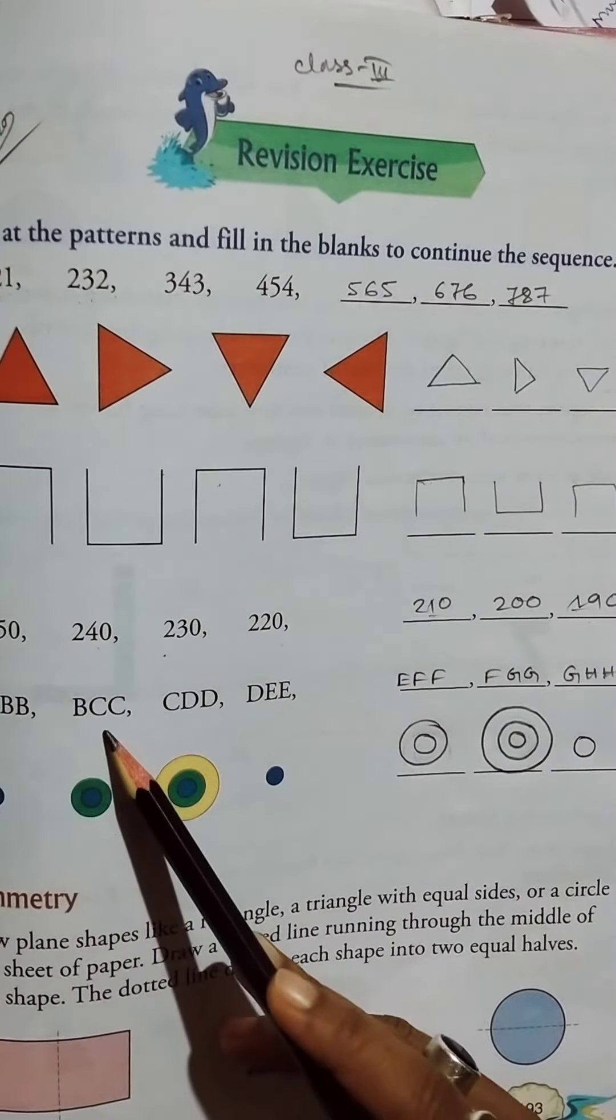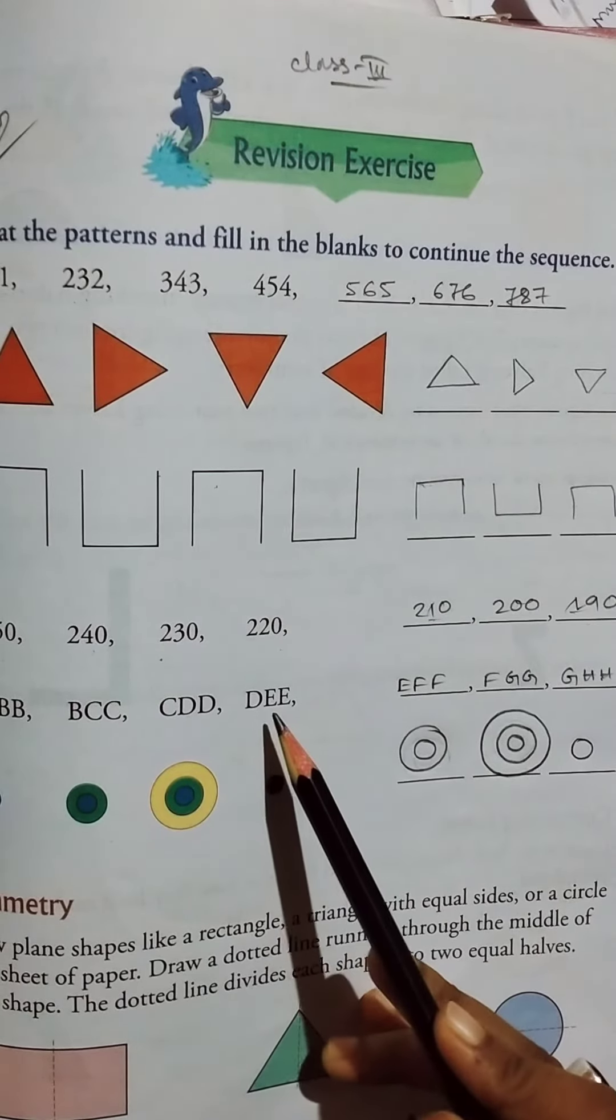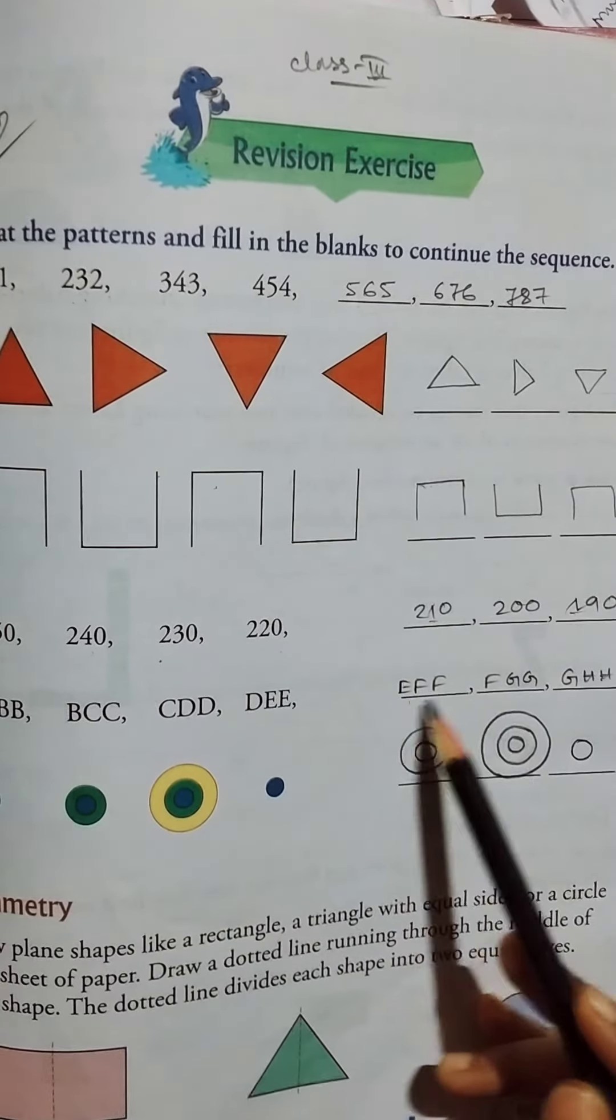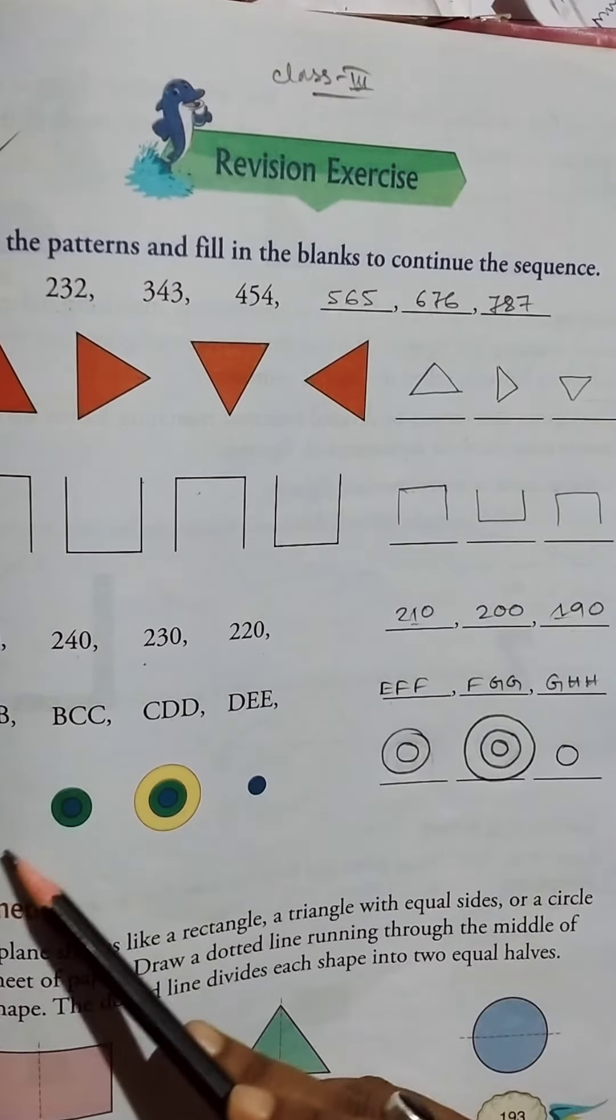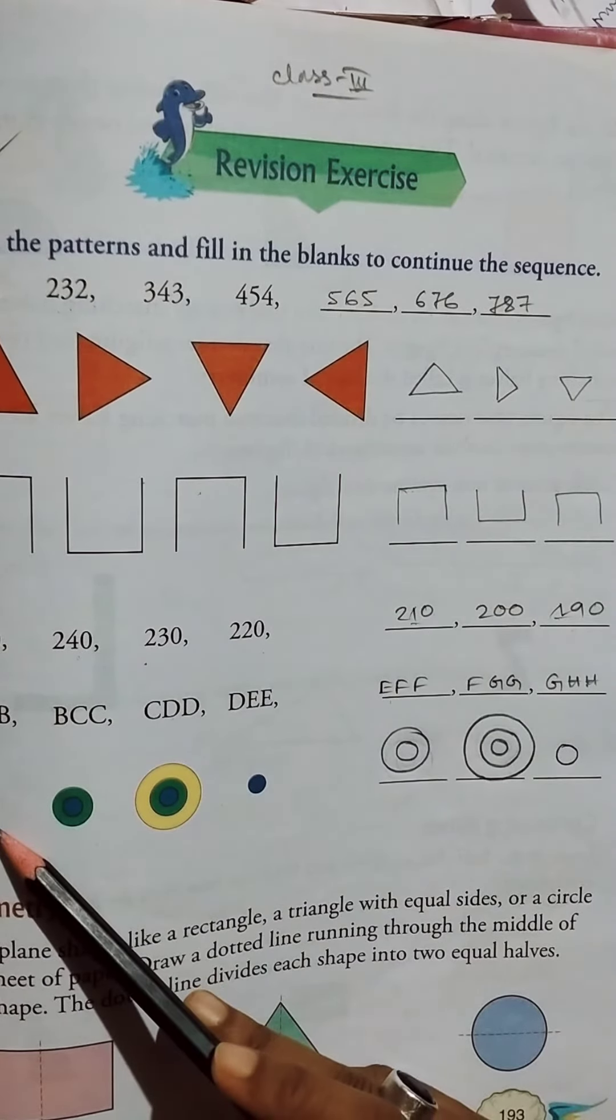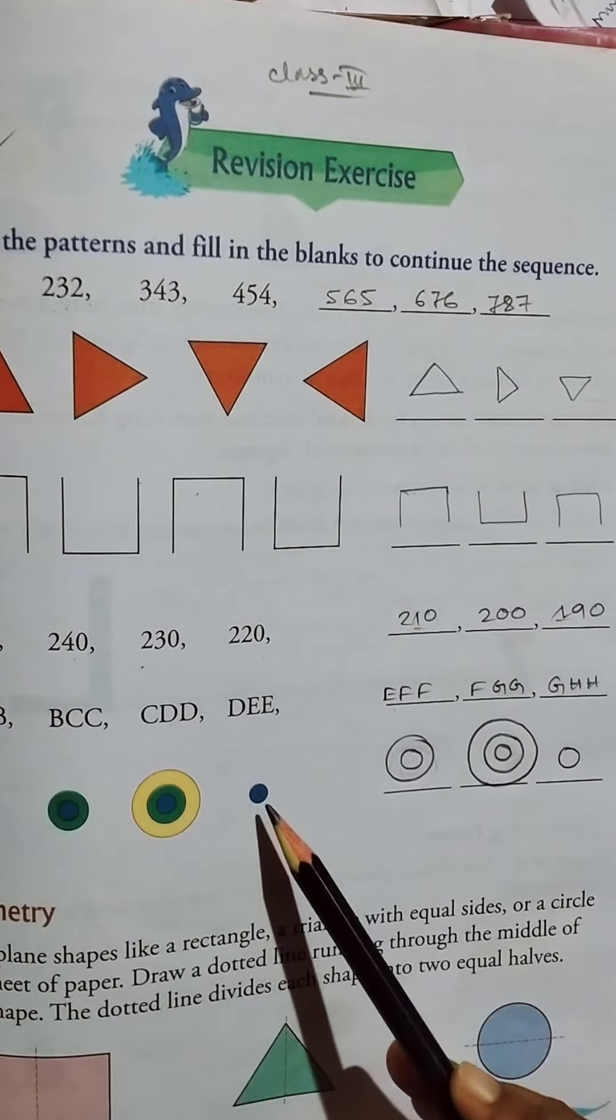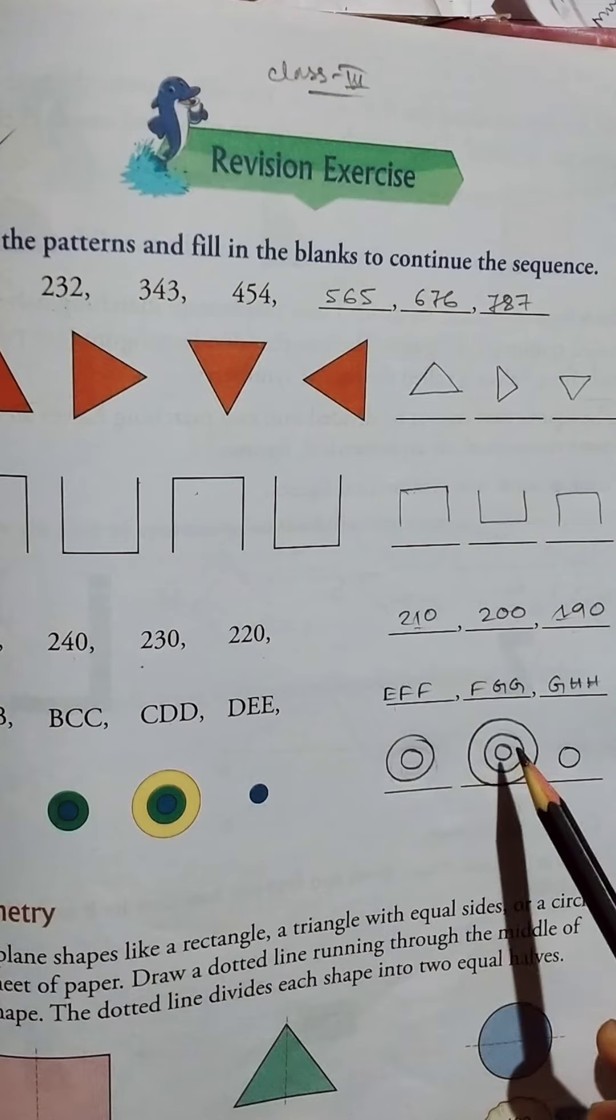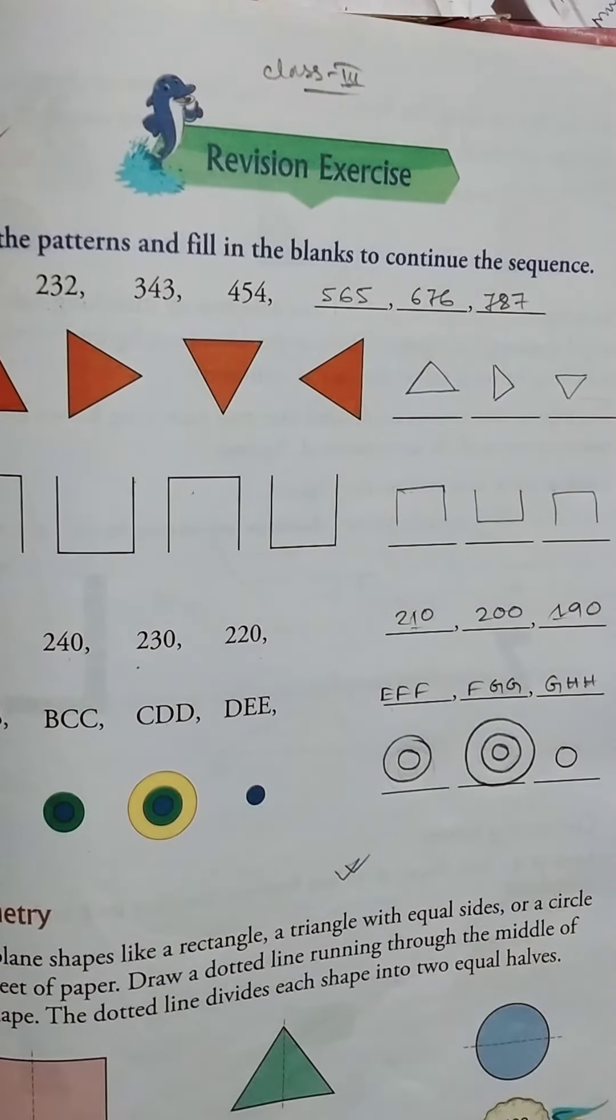ABB, BCC, CDD, DEE - the sequence continues with EFF, GGG, HHH. Then one circle, then two circles, then two circles, then three circles, then one circle. Okay, so that's how we complete these. Thank you. I'll see you then.